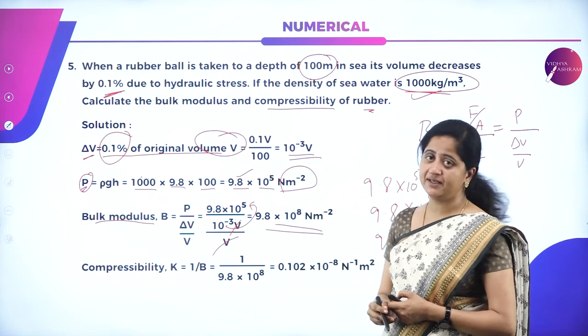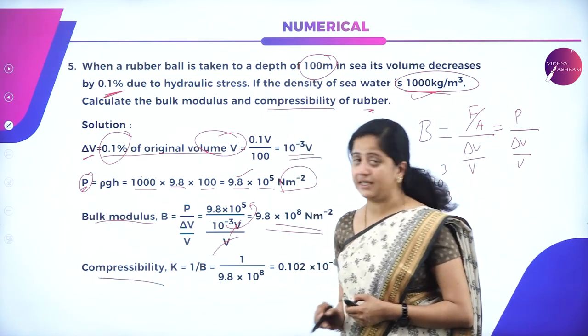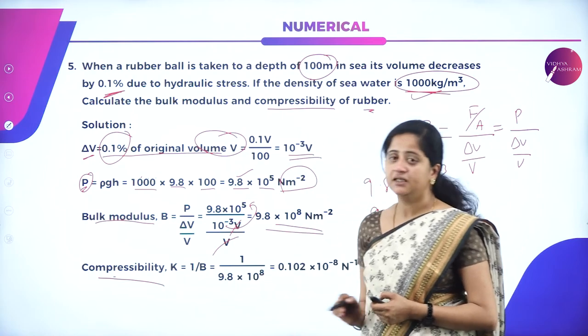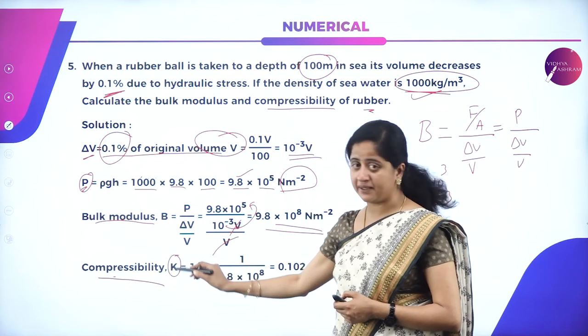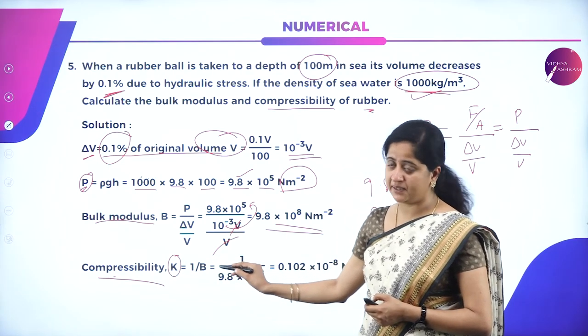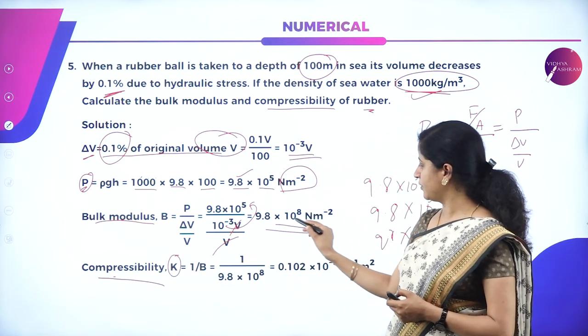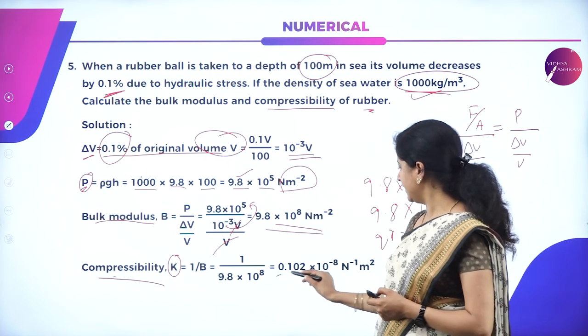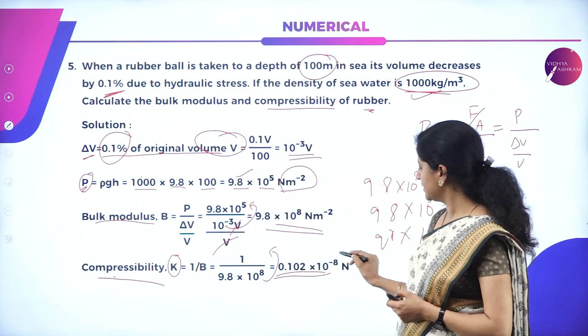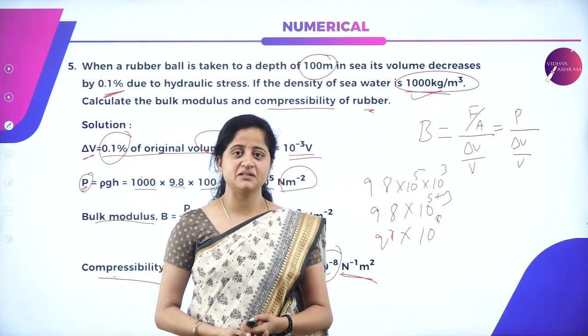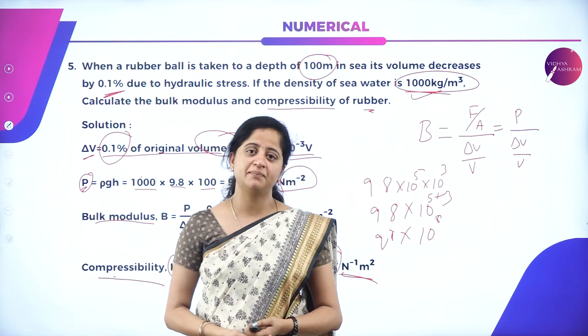Compressibility K is the reciprocal of bulk modulus, denoted by K = 1/B. So K = 1 / (9.8×10⁸) = 0.102×10⁻⁸ = 1.02×10⁻⁹ per N/m². These are a few examples of numerical problems from the chapter Mechanical Properties of Solids. In the next session, we will discuss a new chapter. Until then, take care. Thank you.